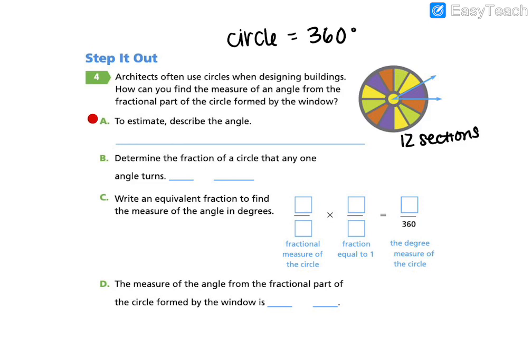To estimate, describe the angle. Well, let's look at this little angle here that we're working with. Using our vocabulary from the last problem, this angle does not look like it's greater than 90 degrees, right? This would be our 90. So it's less than 90. So it must be an acute angle.